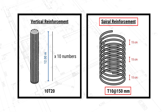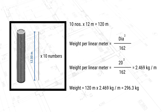The spiral reinforcement has a diameter of 10 mm and a spacing of 150 mm, which is 15 cm. To calculate the steel quantity required for the pile we need to calculate these two items. Starting with the vertical reinforcement: we have 10 bars each 12 meters deep, giving 120 linear meters of vertical steel reinforcement.